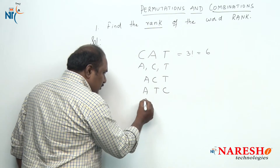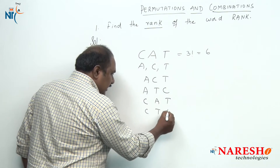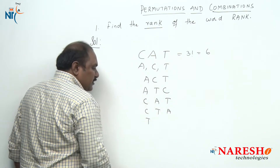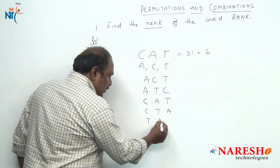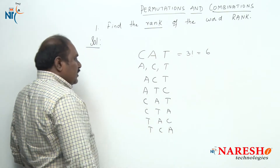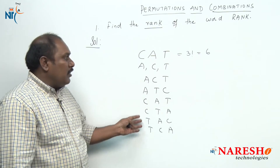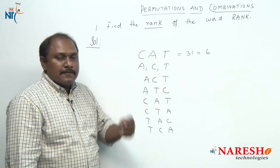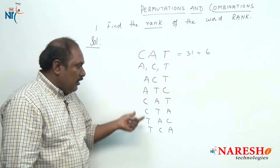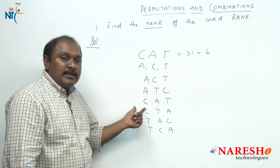The next arrangements start with C: C, A, T and C, T, A. Next are the arrangements starting with T: T, A, C and T, C, A. These are the six arrangements formed using the letters of the word CAT. All these six arrangements are arranged according to alphabetical order, that is according to dictionary.